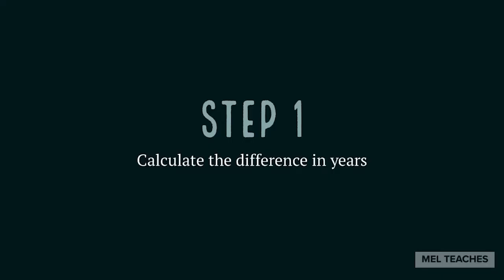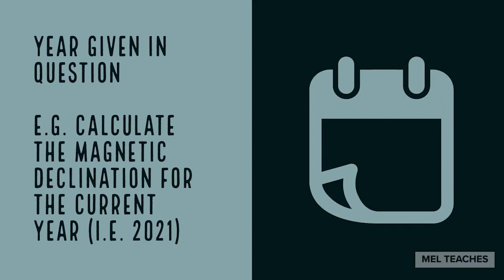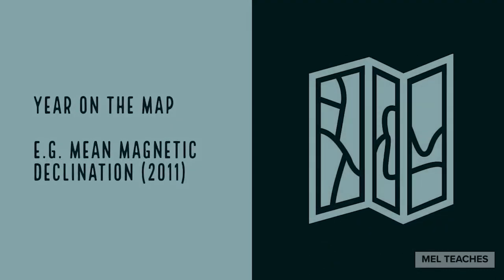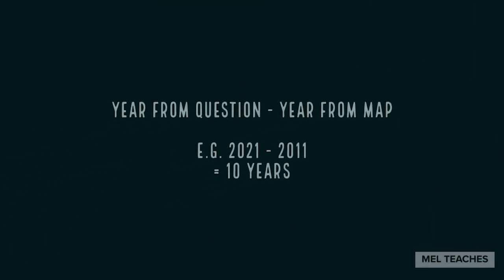Let's break this down into steps so that it is easy for you to follow along. Step number one: calculate the difference in years. The year will be given to you in the question — usually it is the current year, but keep your eyes open in case it is not. Take this year and subtract the year from the map to get an answer in years. Remember to include your units.